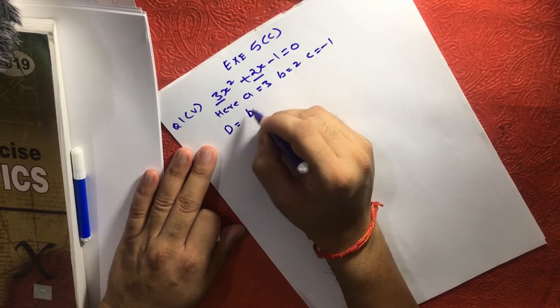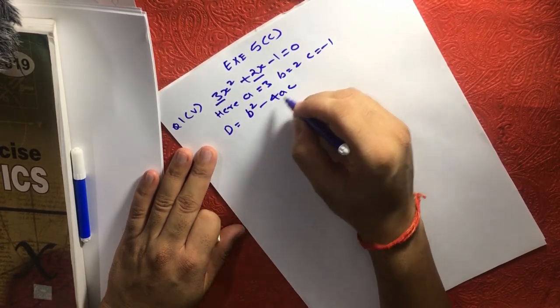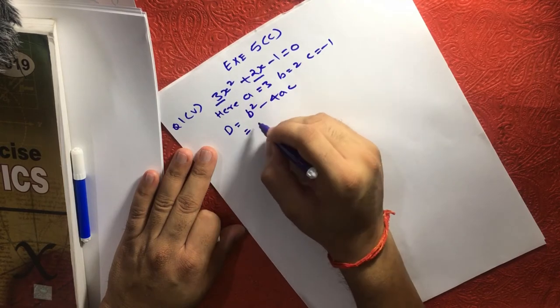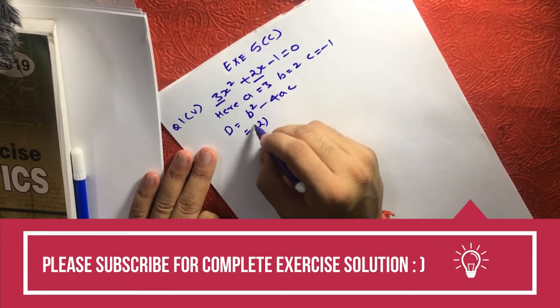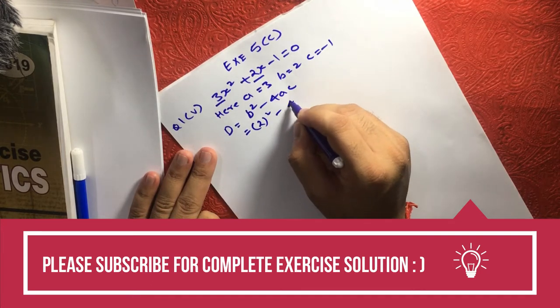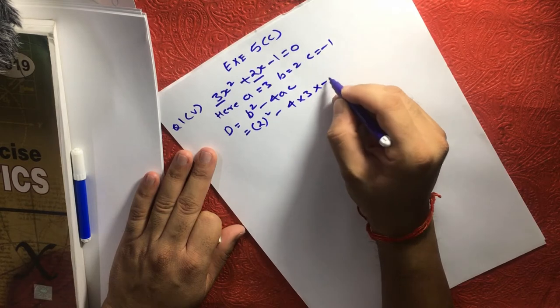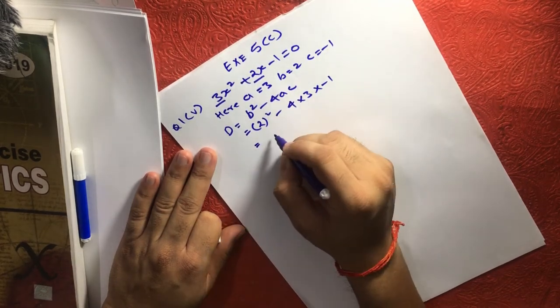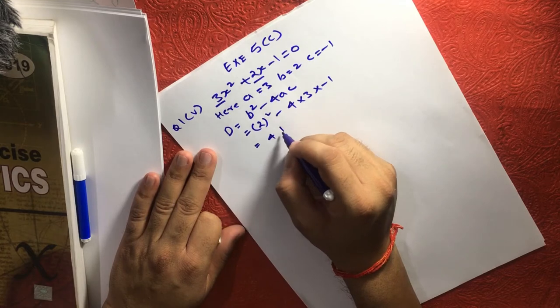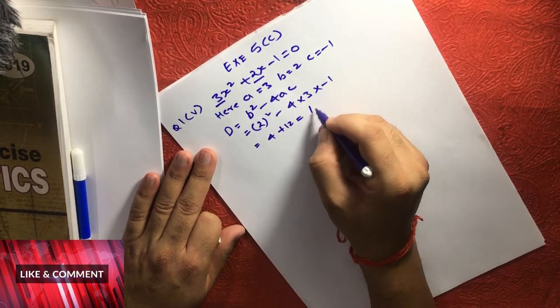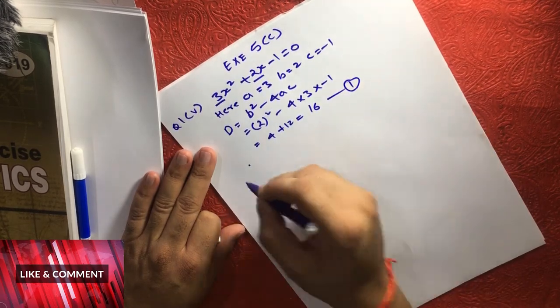Now, we have a formula D is equal to B square minus 4AC. If we solve this, we can see B is 2, so 2 square minus 4 into 3 into minus 1. If we solve this further, we can see 4 plus 12 is equal to 16. And this is your equation number 1.